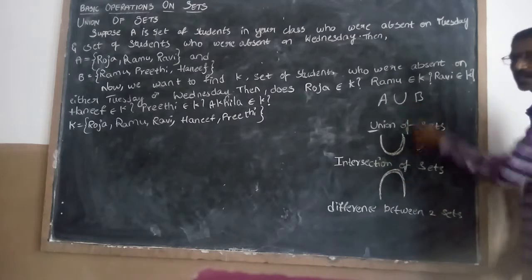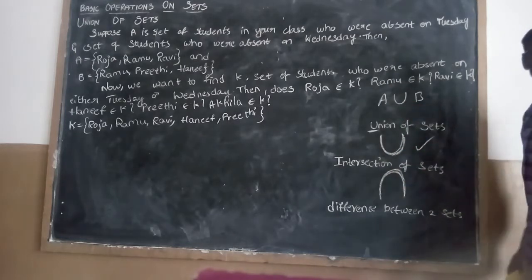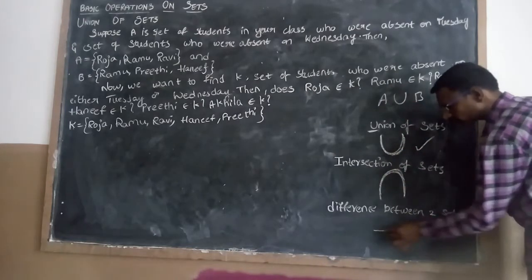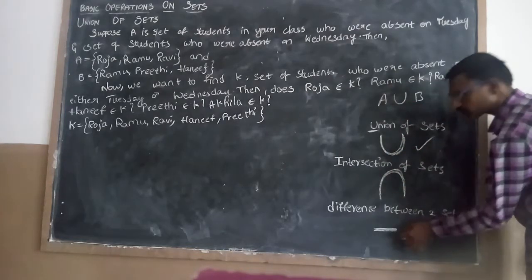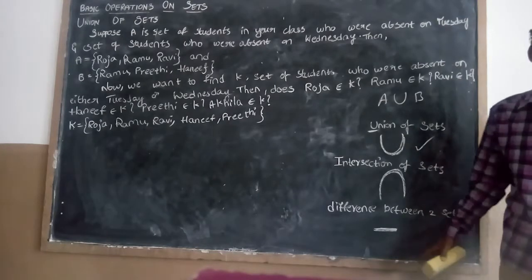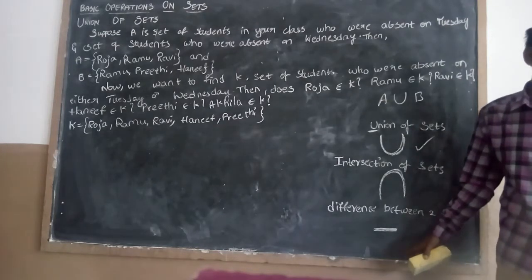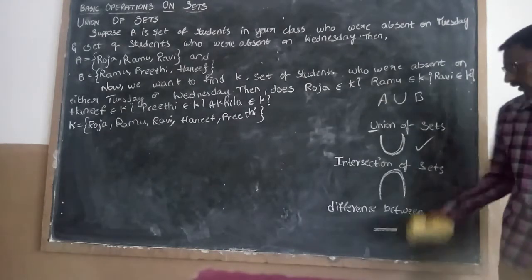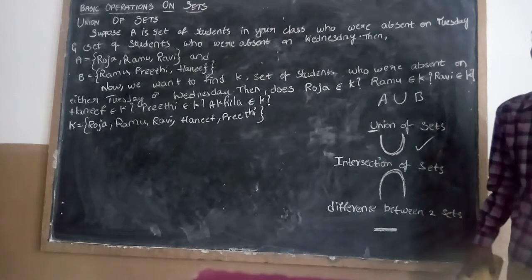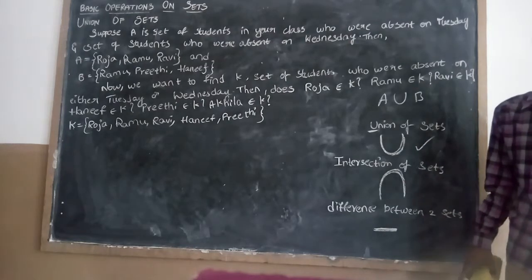Intersection means its symbol is like an upside-down U. And the difference between two sets — we are using minus. Here we have different operations for union, intersection, and difference.